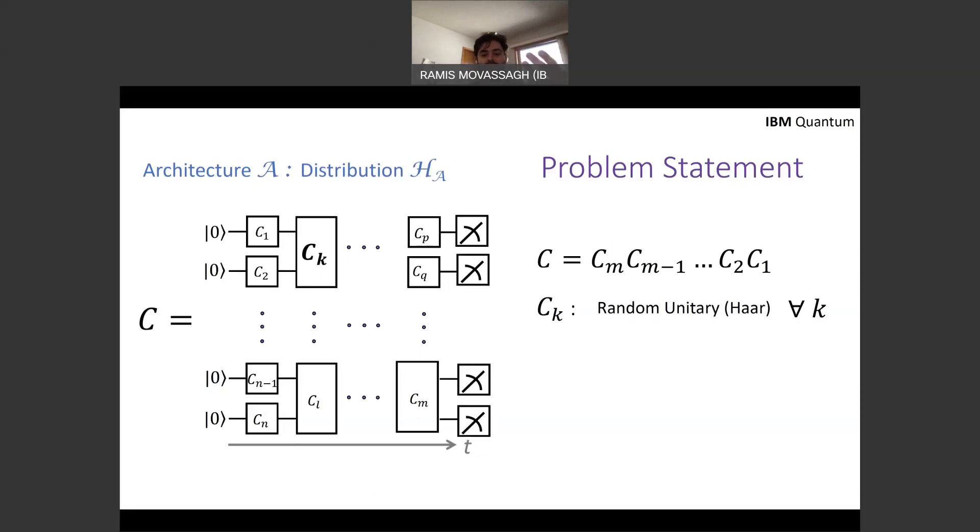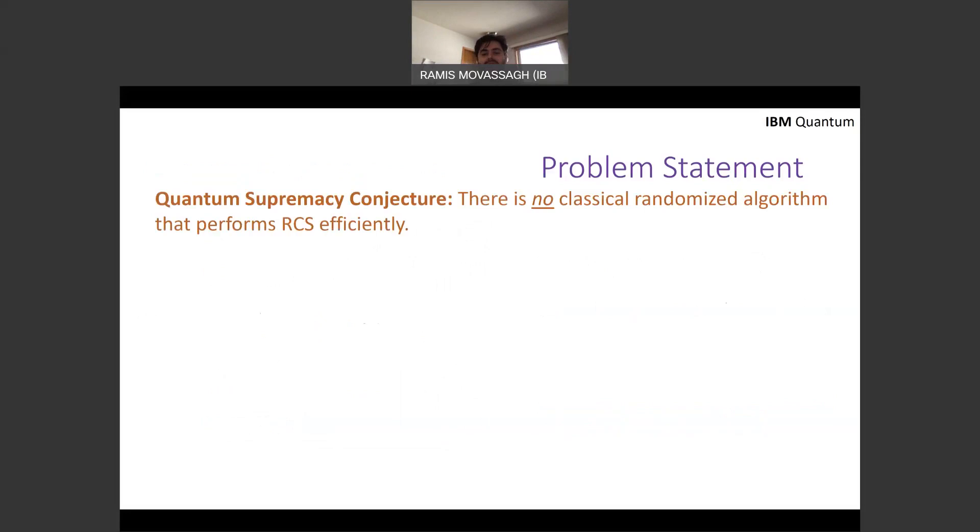And like most computational tasks, we start with all zeros, run the circuit, make measurements. So you perform basically a random algorithm. And the goal is to prove that sampling from the output distribution of this quantum circuit, which you can just run in the lab, would be very hard to replicate on a classical computer.